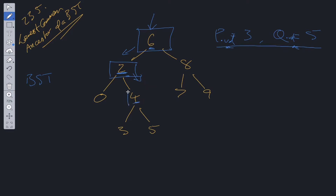We end up at 4, so 4 is the new root. We check: is P.val less than root.val, which is 4? Yes. Is Q.val less than root.val? No — Q.val is greater than root.val. So we have one value less than root.val and one value greater than root.val. When this condition holds, we simply return this node, because we have found the lowest common ancestor of both 3 and 5.